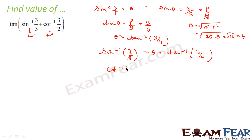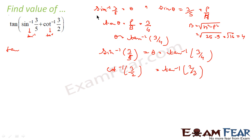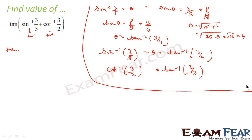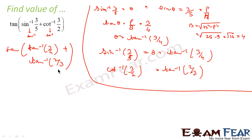Similarly, for cot inverse(3/2): we know that cot inverse(3/2) = tan inverse(2/3), because cot inverse(1/x) = tan inverse(x). So the full expression becomes tan of [tan inverse(3/4) + tan inverse(2/3)].